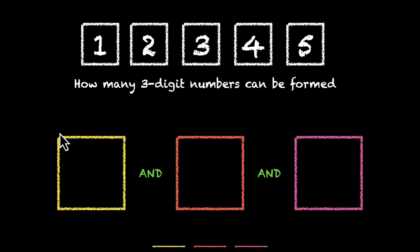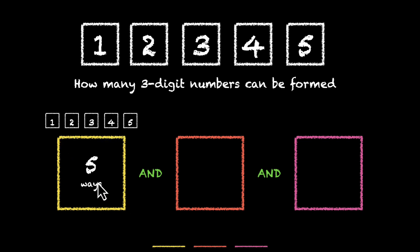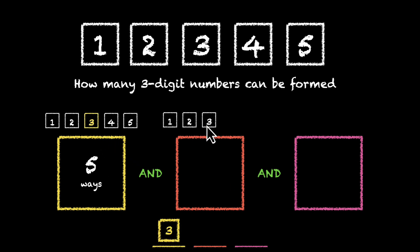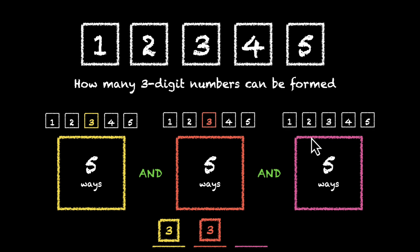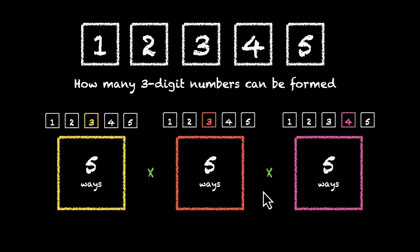For the first digit, there are 5 options: 1, 2, 3, 4, 5 — so 5 ways. If you pick any one, say 3, for the next digit you're still left with all 5 options, so pick 3 again. For the last digit, you again have 5 options — say you pick 4. All 3 parts of the job can be done in 5 ways each, and because we're doing all 3, we multiply: 5 × 5 × 5 = 125 ways.